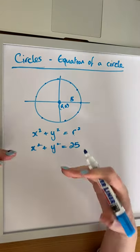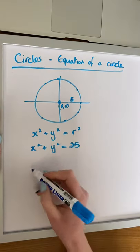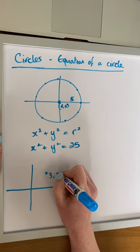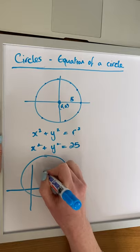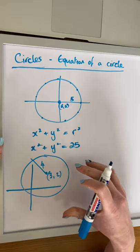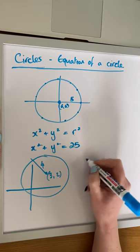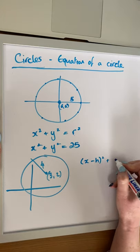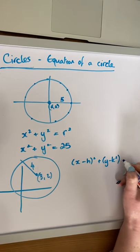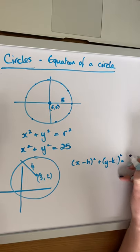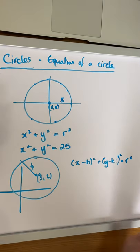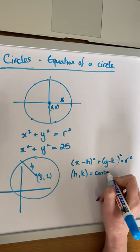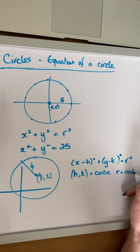The next thing we need to look at is what happens when the center of the circle has been moved off the origin. Say, for example, we have a circle with center (3, 2) and radius 4. Here's where our formulas from our log tables on page 19 come into play. The formula is: x minus h, all squared, plus y minus k, all squared, equals r squared — remember, the squared is outside the bracket. Here hk is the center of the circle and r is the radius.